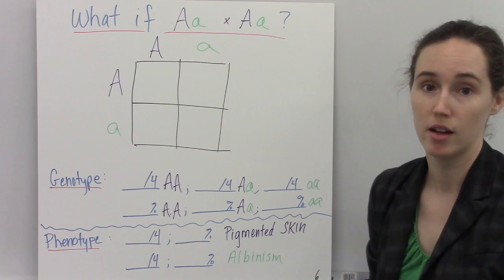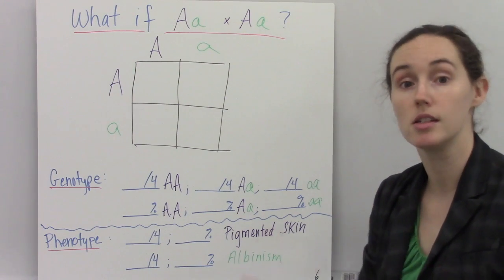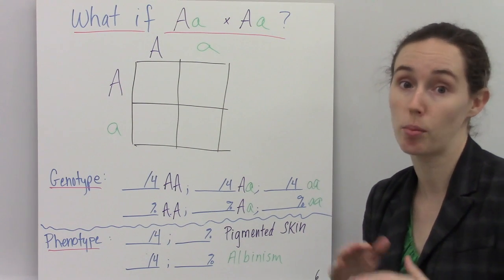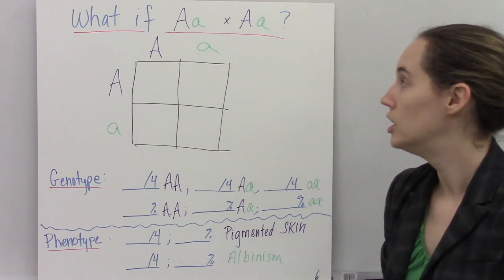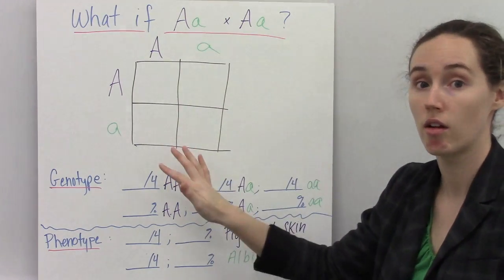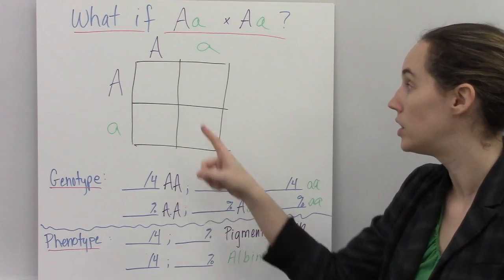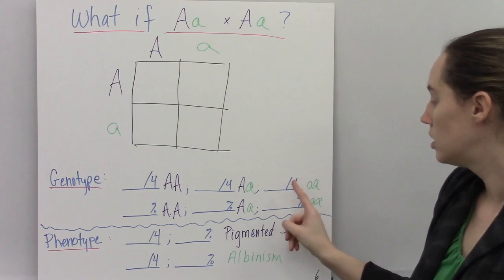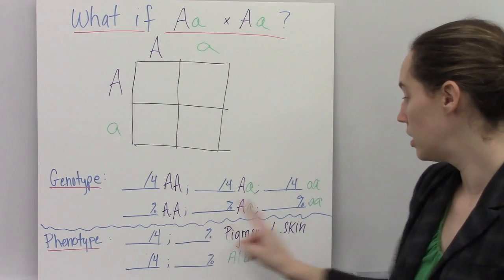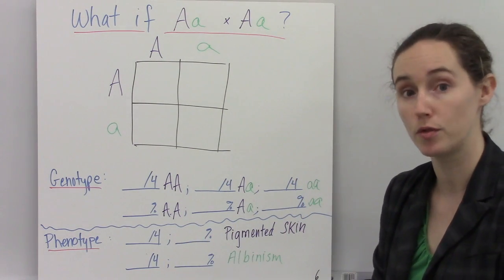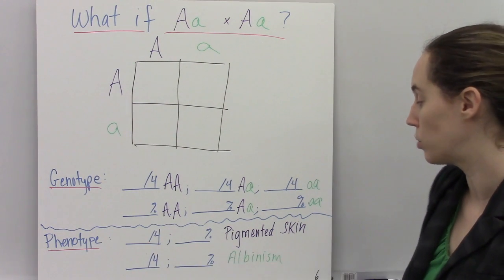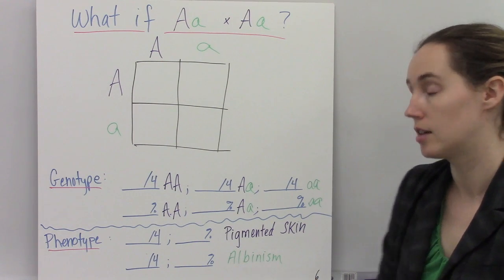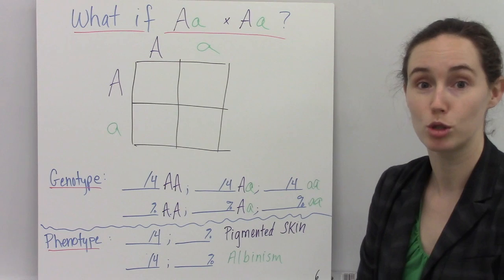This one's a little more complicated, and what I'd like you to do is to stop the video right now, push pause, and I want you to do your best using the Punnett square dance method to complete the Punnett square, and then count the number of boxes that have each genotype, and then translate that into percentages, and do the same for phenotype. Figure out how many and what percent will have pigmented skin, and how many and what percent will be albino. So I'll pause that now, and then replay, and we'll check and see if you're right.